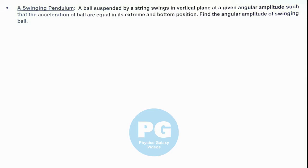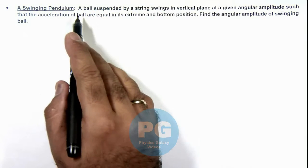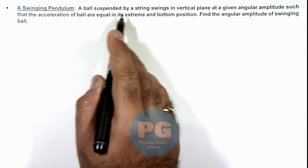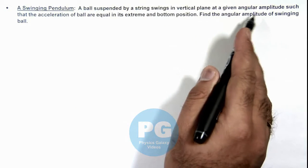In this illustration we'll discuss a swinging pendulum, where we are given that a ball suspended by a string swings in a vertical plane at a given angular amplitude such that the acceleration of the ball are equal in its extreme and bottom position.